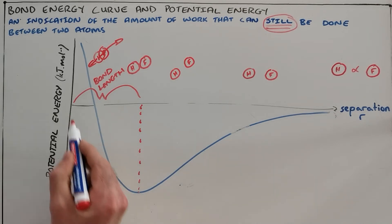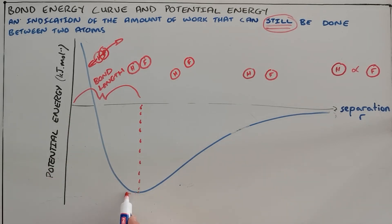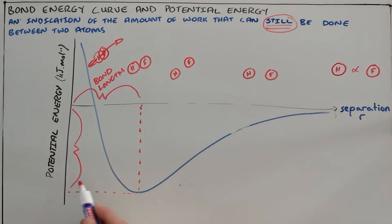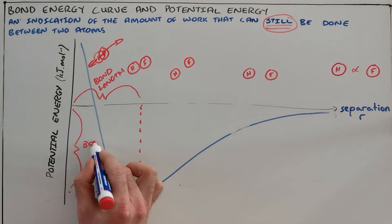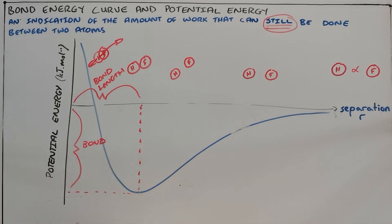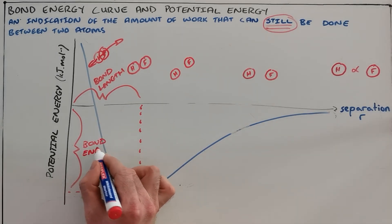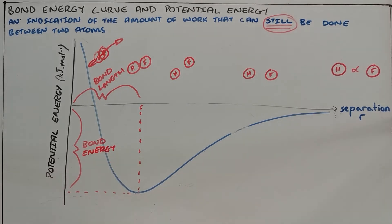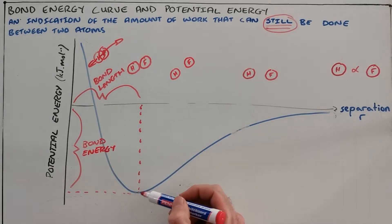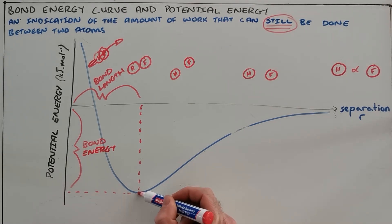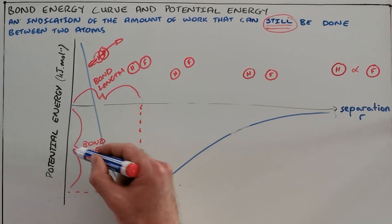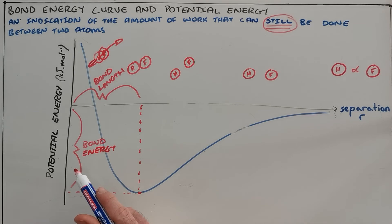The other value we can read from this graph is the bond energy. At the minimum potential energy point on the curve, that amount of energy is also our bond energy — the amount of energy given off when a bond forms. Bonds form so that atoms can achieve greater stability, and when they are at their most stable and their potential energy is at a minimum, the energy they have given off in moving together is referred to as the bond energy.